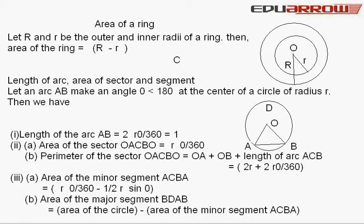Area of a ring: Let capital R and small r be the outer and inner radii of a ring, then area of a ring is equal to π(R² - r²), where R² is the radii of the outer and small r is radii of inner ring.